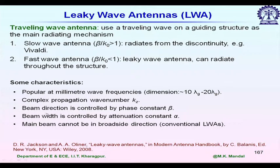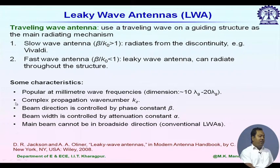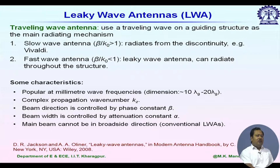Let us concentrate on leaky wave antennas — their characteristics, how they radiate, and what structures are possible at millimeter-wave frequencies. Since the structure leaks power throughout its length, we use the complex propagation wave number k_z, which has both an alpha part (attenuation constant) and a beta part (phase constant). It is essentially a wave-guiding structure with some semi-open or open structure so that it can radiate or leak power throughout its length. The alpha part is non-zero for the guiding structure.